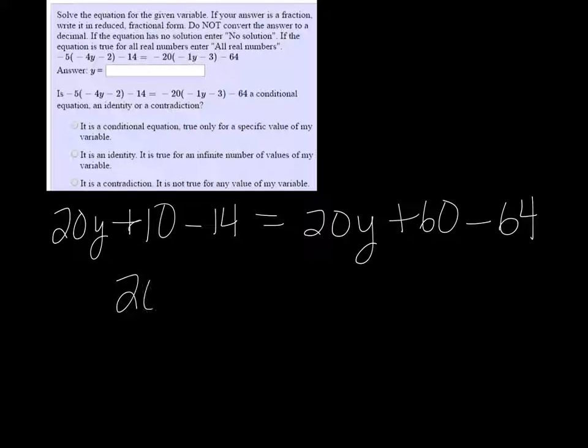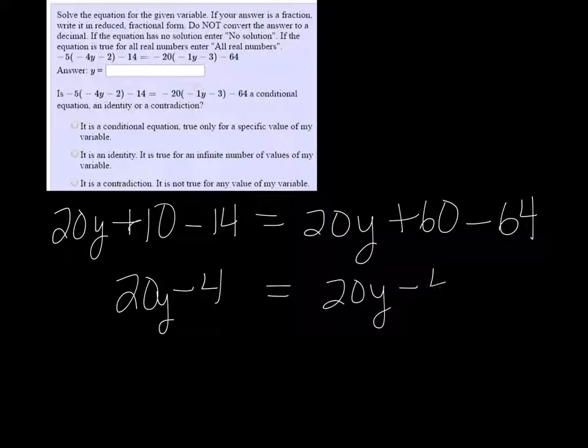Combining like terms, I get 20y minus 4 on the left, and I get 20y minus 4 on the right.